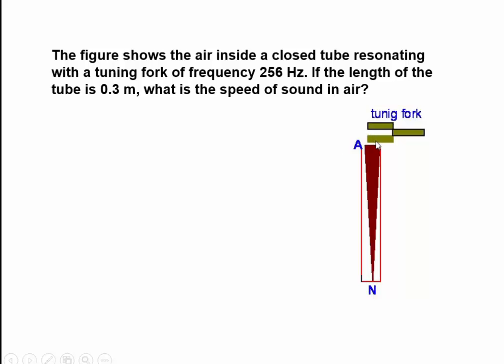You have seen this experiment done. When resonance occurs in a closed tube, the first mode of resonance, you have an anti-node at the mouth and a node at the closed end. What is the distance between an anti-node and a node? That distance is a quarter of a wavelength. So what you have here, the length of the tube, that is 0.3 meters, is a quarter of a wavelength.